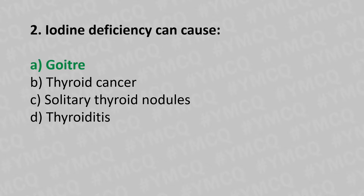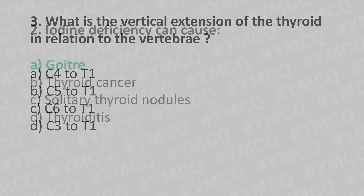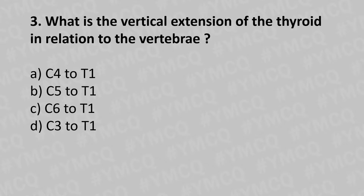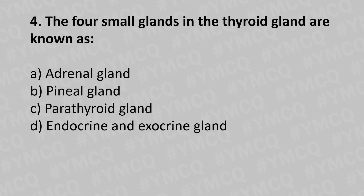Now let's move to question number three. What is the vertical extension of the thyroid in relation to the vertebra? Option A - C4 to T1, option B - C5 to T1, option C - C6 to T1, option D - C3 to T1. The answer is option B - C5 to T1.